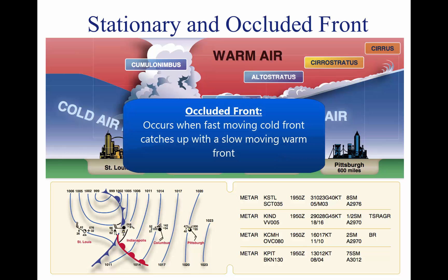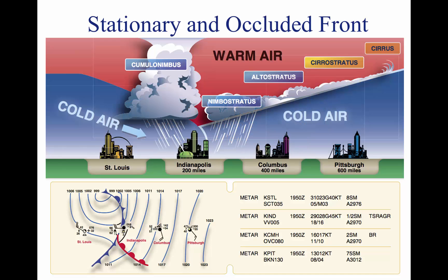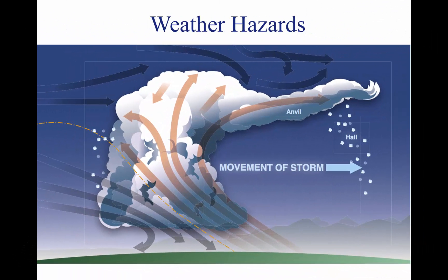An occluded front occurs when a fast-moving cold front catches up with a slow-moving warm front. As the occluded front approaches, warm front weather prevails but is immediately followed by cold front weather. Weather can pose serious hazards to flight, and a thunderstorm packs just about every weather hazard known to aviation into one vicious bundle.